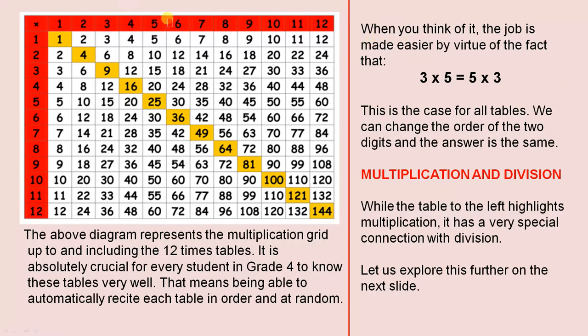By that I mean, let's say you're doing the 6 times tables. You should be able to go 6 1s are 6, 6 2s are 12, 6 3s are 18, 6 4s are 24, 6 5s are 30, 6 6s are 36, etc. Or, you should be able to go 6 2s are 12, 6 8s are 48, 6 4s are 24, 6 11s are 66. That's what I mean by in order and at random.